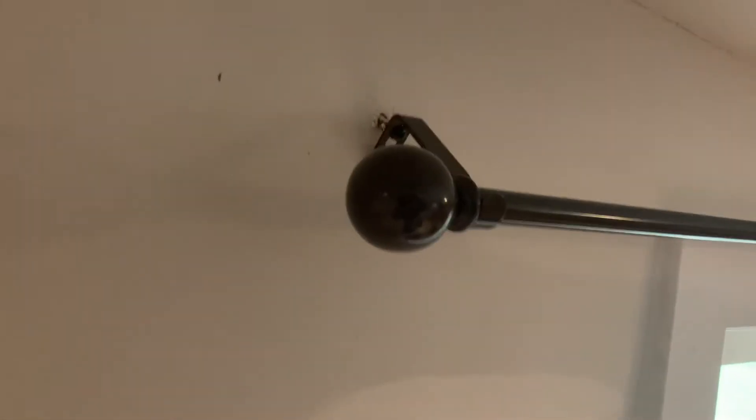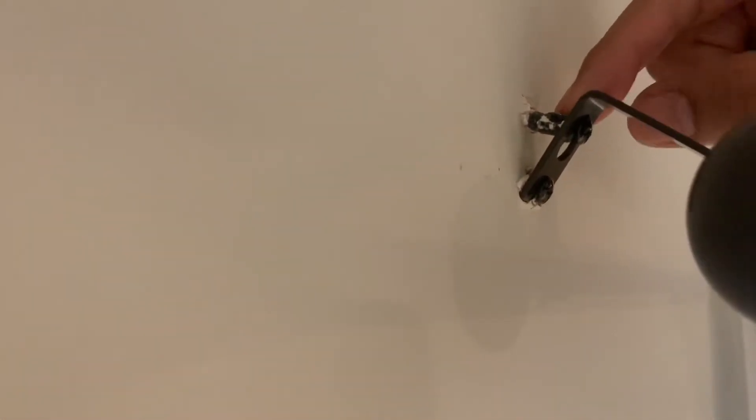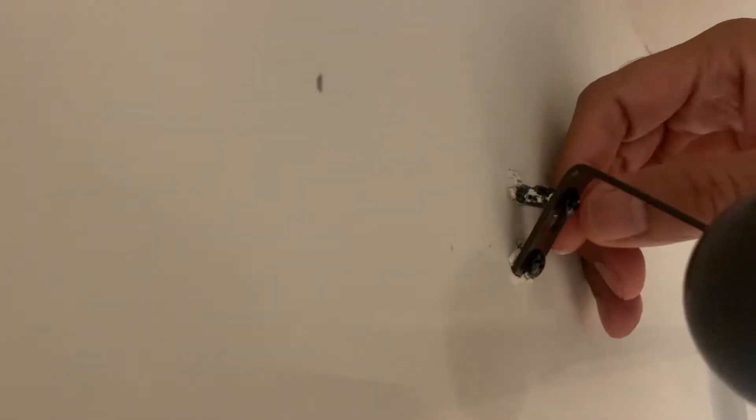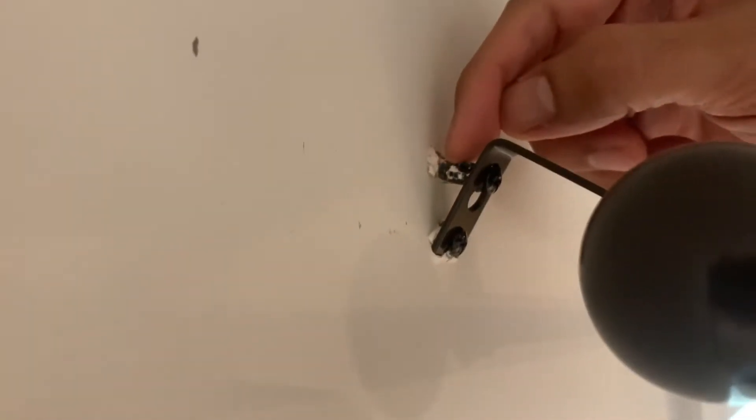I have this curtain rod that has been screwed in with a single screw and its anchor in the wall. As expected, it has failed and is coming out.